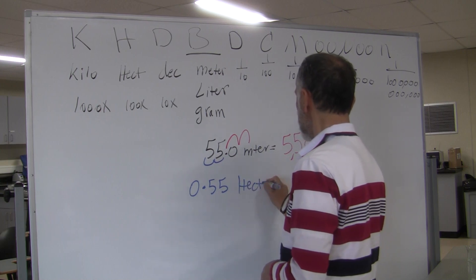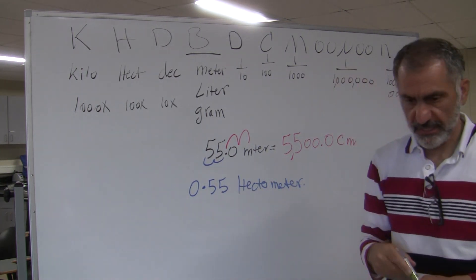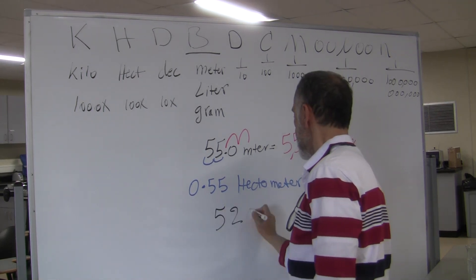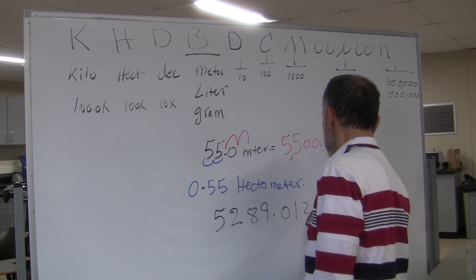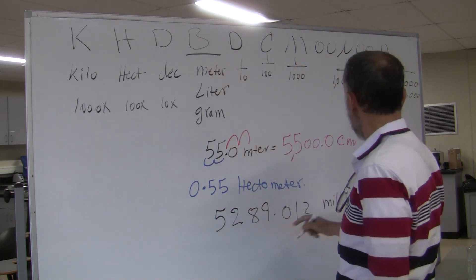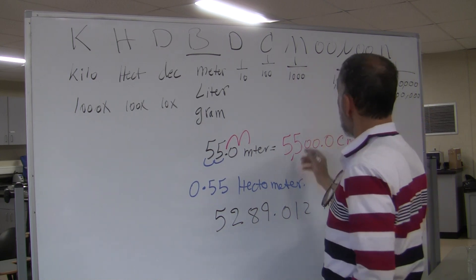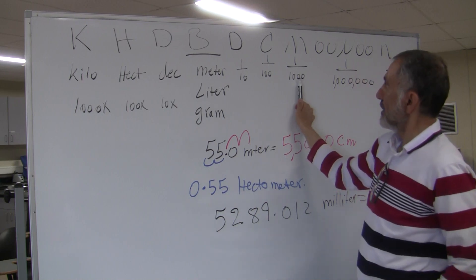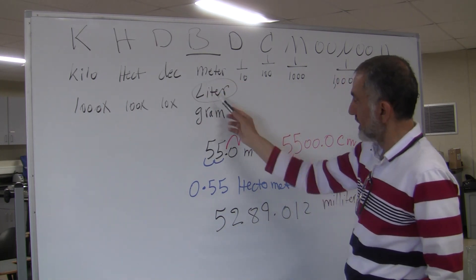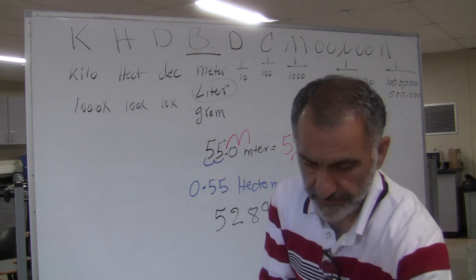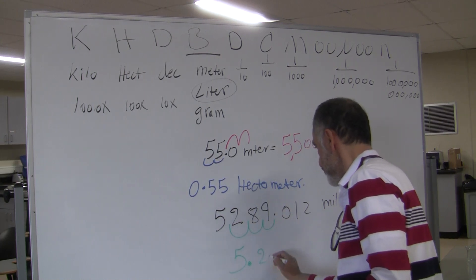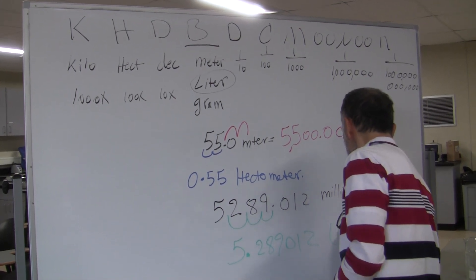Another example: 5,289.012 milliliters equals how many liters? You have milliliters, and you want liters, so move the decimal three places to the left: 5.289012 liters.